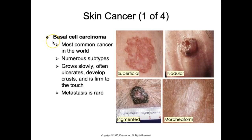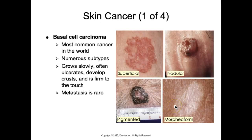Basal cell carcinoma is the most common cancer in the world and has many different subtypes, including superficial, nodular, pigmented, and morpheaform, which is a recurrent tumor. Clinical presentations vary depending on the subtype. It grows slowly and can develop a depressed center, a rolled border, and small blood vessels on the surface giving a telangiectasia appearance. As it grows it can invade surrounding tissues over months and years, but it rarely metastasizes because it typically does not enter blood or lymphatic vessels.